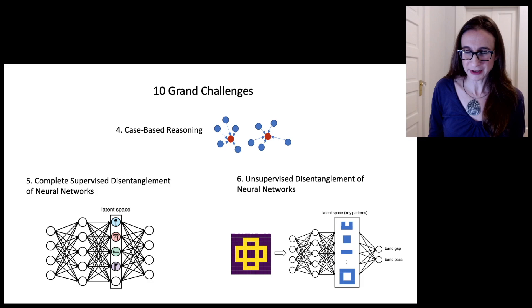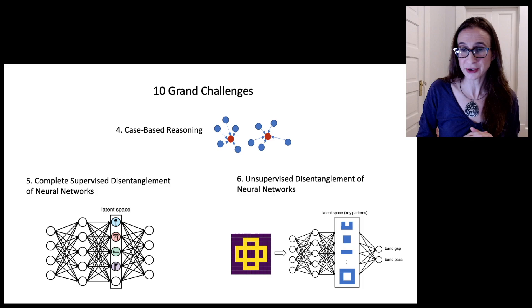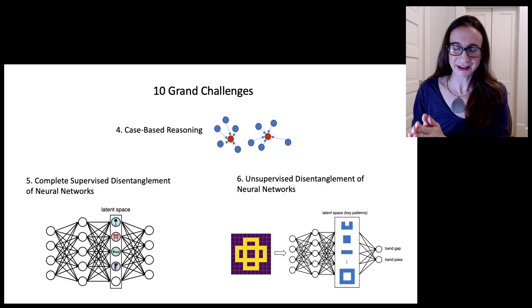And then the sixth one is unsupervised disentanglement. So the difference between supervised disentanglement and unsupervised disentanglement is that for supervised disentanglement you know what the concepts are. So you know that you want this neuron to be the airplane neuron, and you know what an airplane is, and you can provide data to the network that tells it what an airplane is.